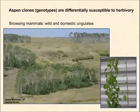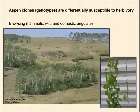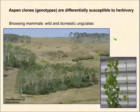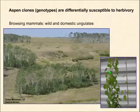Aspen clones, though subject to extensive herbivory, are not uniformly susceptible to attack — and that's true with respect to both browsing mammals and insects. Here we see a photo from the Cedar Mountain area in Utah where the clone in the foreground has fairly extensive understory regeneration, whereas the clone in the back has very little. In controlled feeding studies with deer and elk, we can see that different genotypes are differently susceptible to browsing — on the left is a resistant clone and on the right is a non-resistant clone.